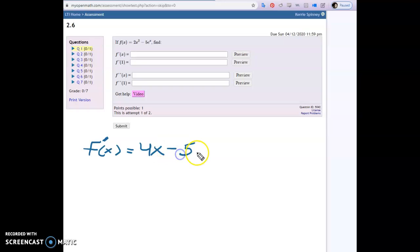And then derivative e to the x is e to the x, so the constant out front just stays, right? It's still 5 times e to the x.